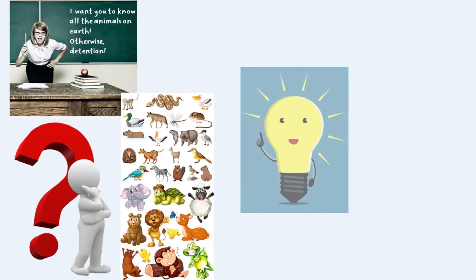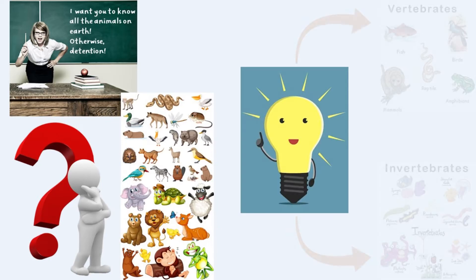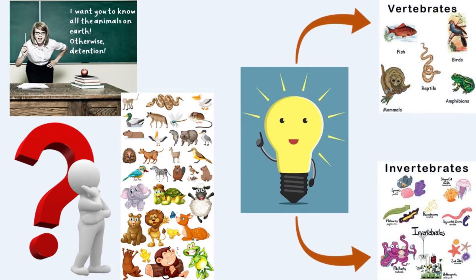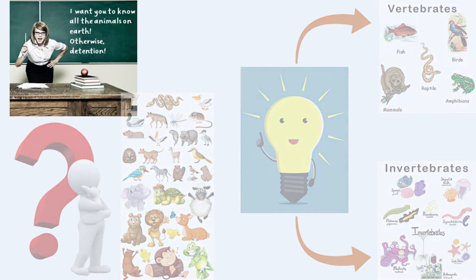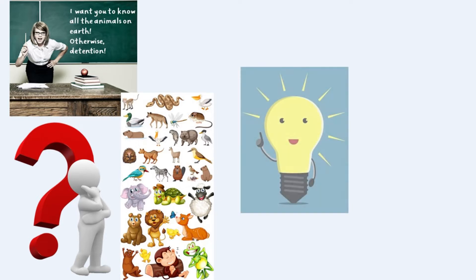If you bend forward and feel your back with your hand, you will feel your backbone. Scientists have sorted animals on earth into two large groups: animals that have a backbone and animals that do not have a backbone. These are very big groups, so they are further divided into similar animals. It is easier for us to learn about groups of similar animals than to try to study each type.